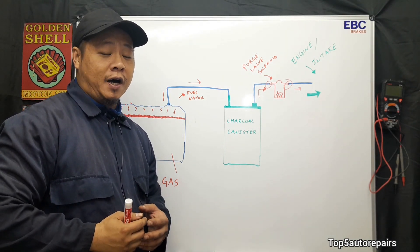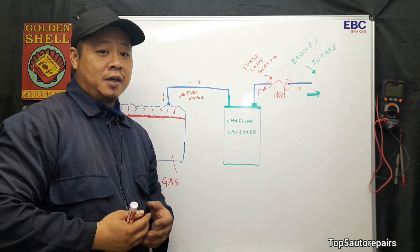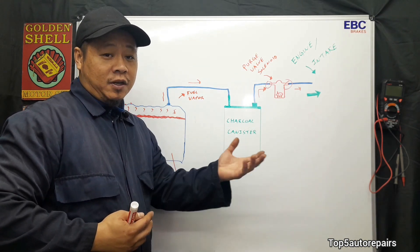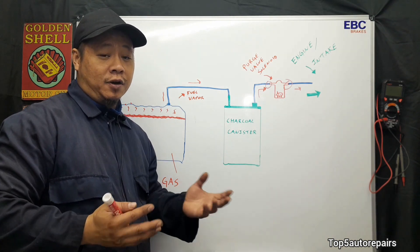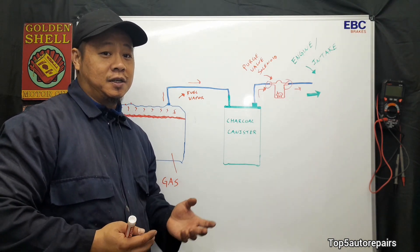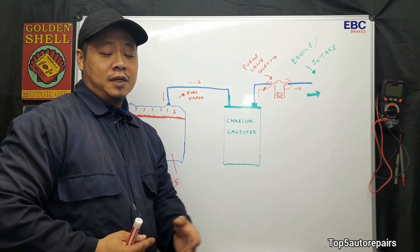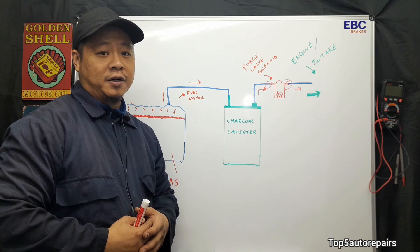For example, you're going to notice rough idle. You're going to have some sort of EVAP codes. You're also going to notice hard starts, basically a hard time starting your vehicle. And you're also going to notice extreme lean condition. It's a lean condition because there's air being introduced inside your engine that is not monitored.